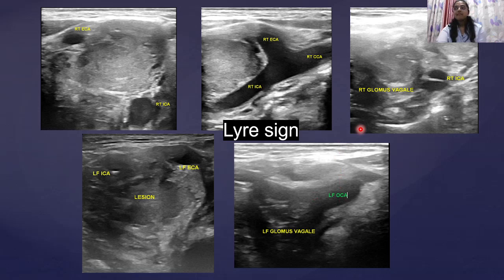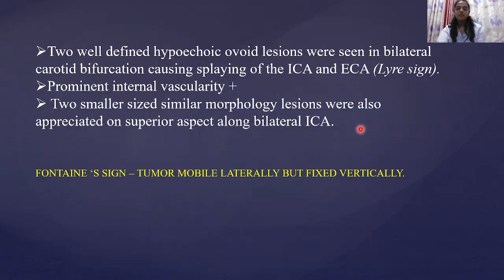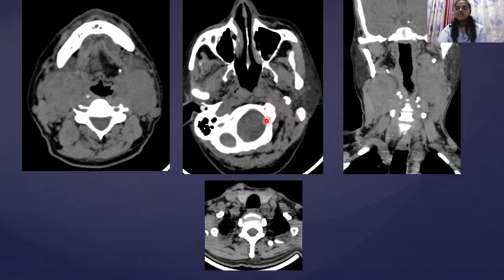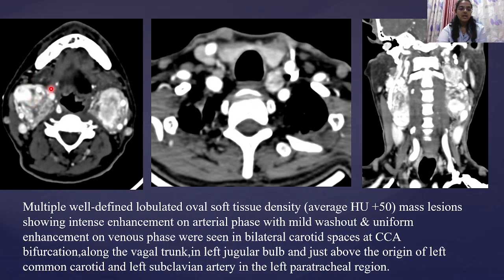To further characterize these lesions we proceeded with CT scan of the neck. On non-contrast phase images, lobulated soft tissue density lesions were seen bilaterally in the region of the carotid bodies. Another mass was appreciated at the skull base on the left side in the region of the jugular bulb. On contrast imaging, intensely enhancing masses were identified — bilateral carotid body tumors, a mass in the left paratracheal region, and two superior masses in relation to the ICA.